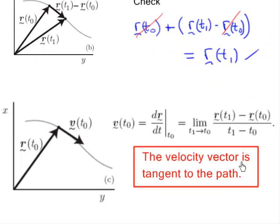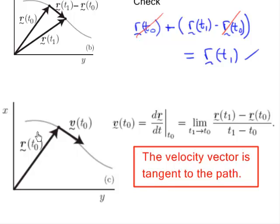We just provided a rigorous argument that the velocity vector — defined by this limiting process — is a vector which is tangent to the path. It is always tangent to the path. Velocity is tangent to the path. Don't forget it.